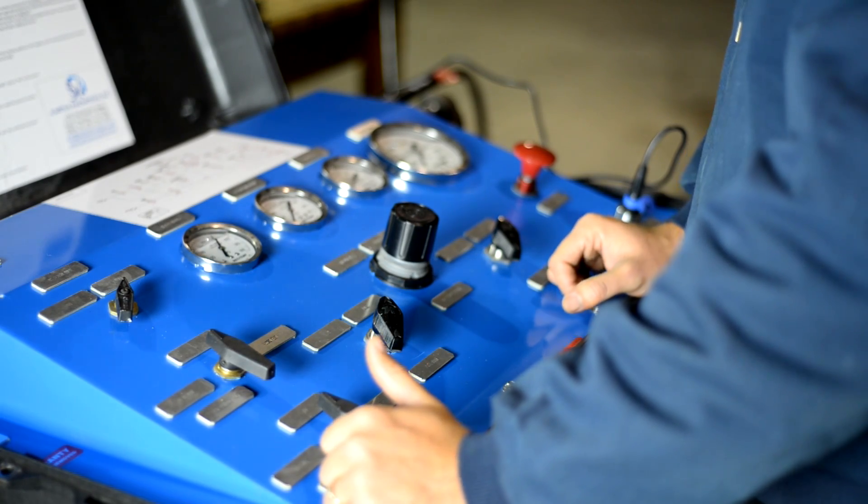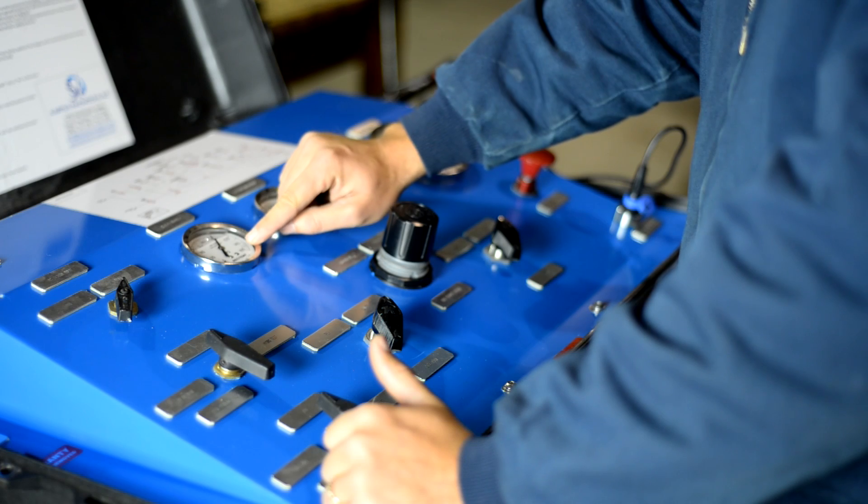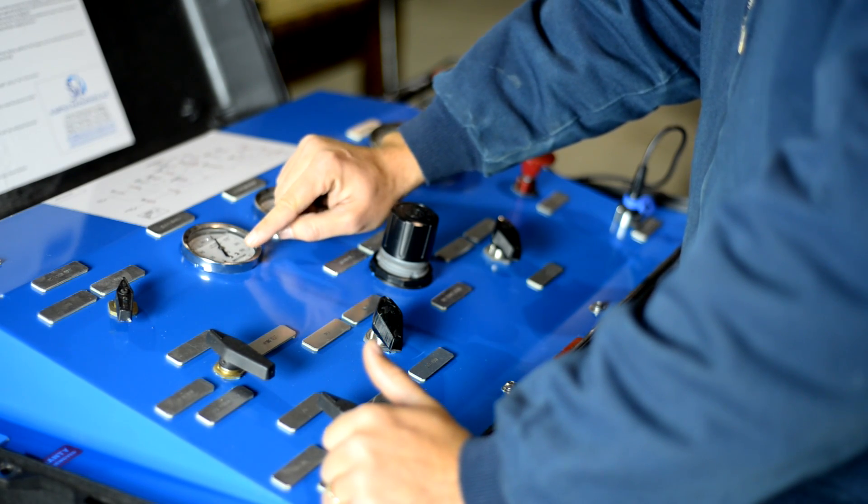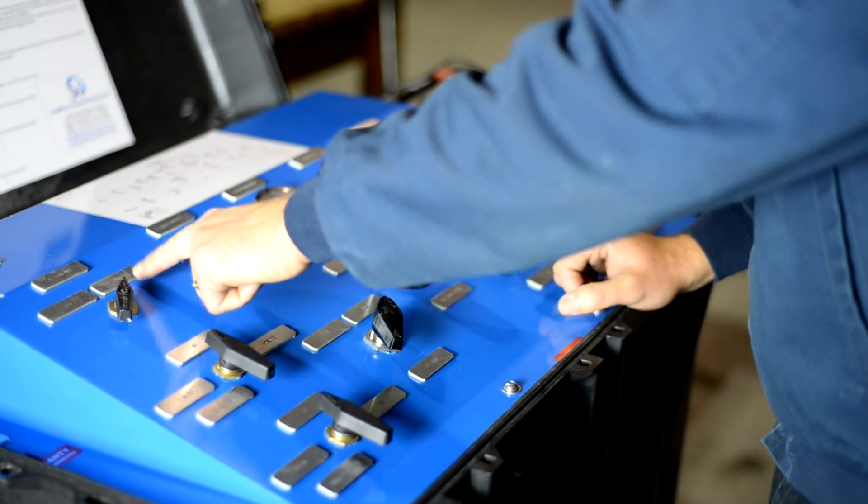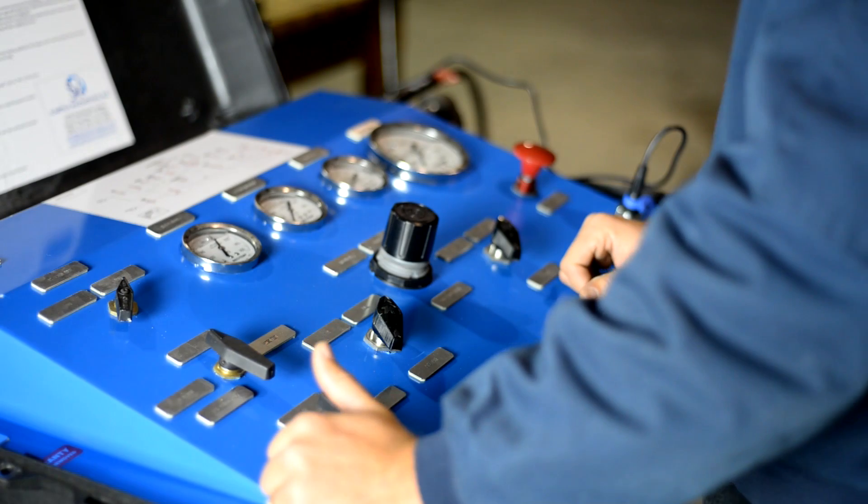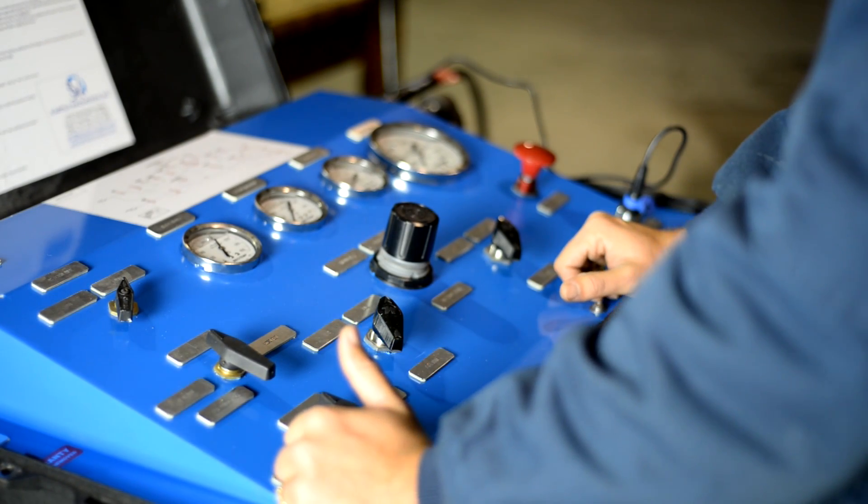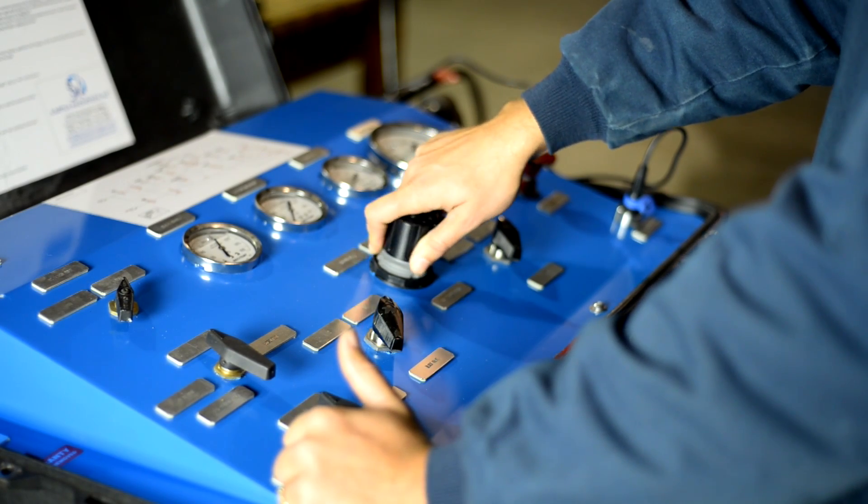Prior to testing, check the air inlet pressure gauge to ensure that there is pressure in the system. Make sure that the valves are all in closed position. Ensure that the test pressure control has been turned counter-clockwise to stop to ensure there is no pressure on the system.